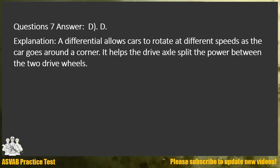Question 7. Answer D. Explanation: A differential allows cars to rotate at different speeds as the car goes around a corner. It helps the drive axle split the power between the two drive wheels.